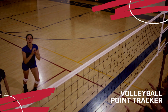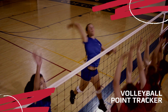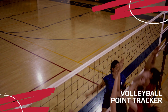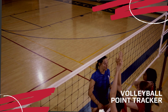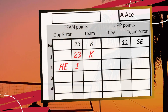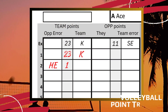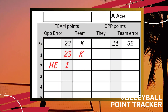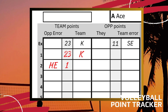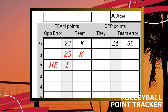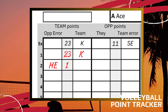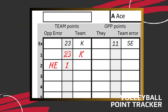For the next point, player number 1 from the opponent's team makes a hitting error by hitting the ball out of bounds. Since it was our point, we place HE for hitting error in the first column on our side, with the player's number 1 in the second column on row 2 for point number 2. Score is 2 for us and 0 for them.